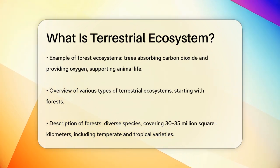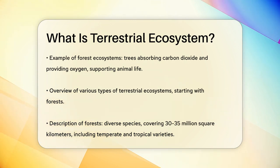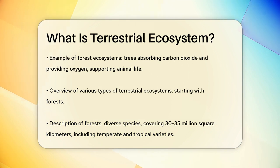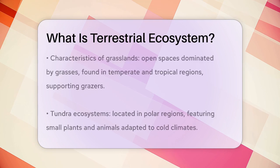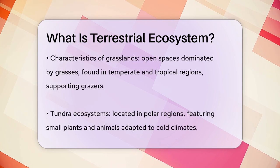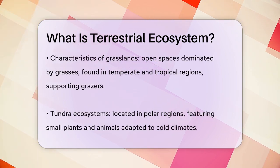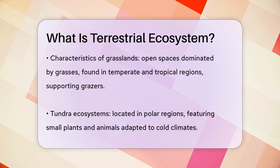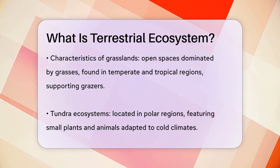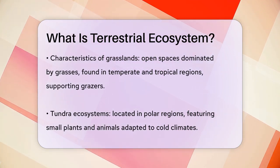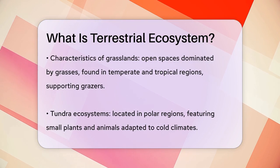Grasslands are another type, characterized by vast open spaces with grasses and few trees. These can be temperate, like the prairies in North America, or tropical, like the savannas in Africa. Grasslands support a wide variety of animal life, including grazers like gazelles and antelopes.